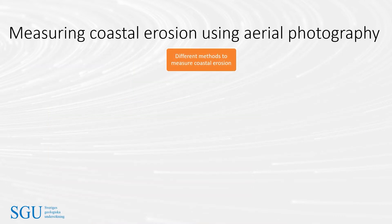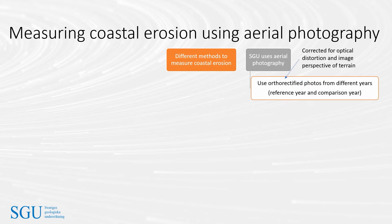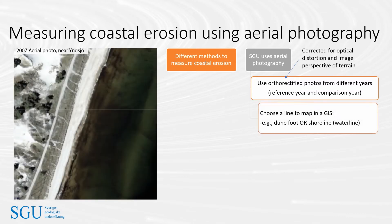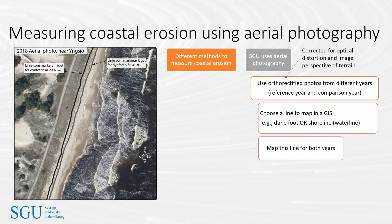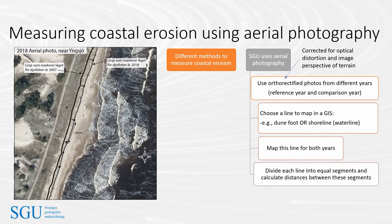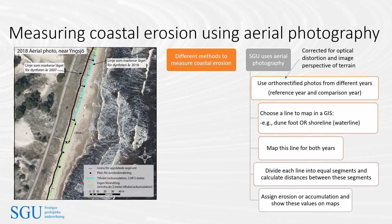There are different methods to assess coastal erosion. SGU has done this from aerial photography by viewing orthorectified aerial photographs from different years. The earlier year is the reference year and the latter is the comparison year — in the example shown, 2007 is the reference year and 2018 is the comparison year. We then choose a line to map in a geographic information system, such as the water line or the line marking the base of the sand dune behind the beach. In this example we have chosen the dune foot. We map this line for both years, then use GIS tools to divide each line into equal segments, calculate distances between them, and assign those distances as either accumulation or erosion. We then report the numbers and show the lines on maps.